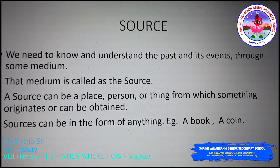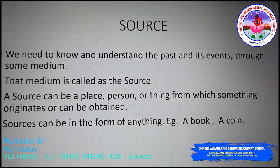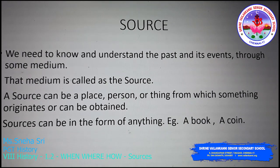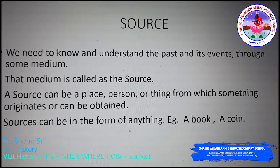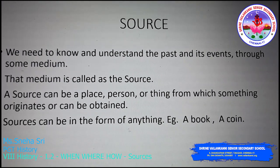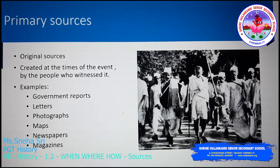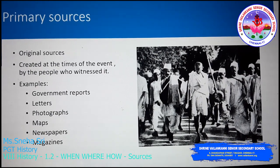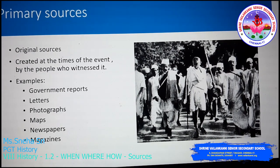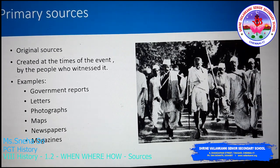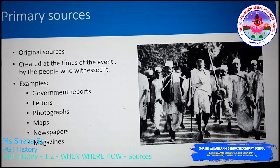So I get this much information from your school diary, which means it is a source. Thus a source can be a place, person, or thing from which something originates or can be obtained, especially in the form of information. With respect to history, sources can be in the form of anything — a book, a coin. There are two types of sources to study modern history: primary and secondary sources.